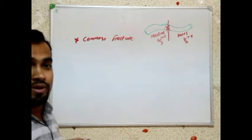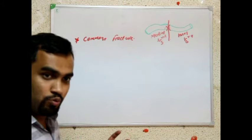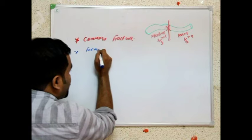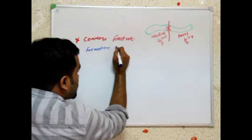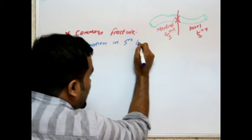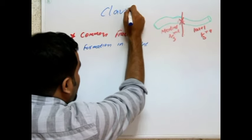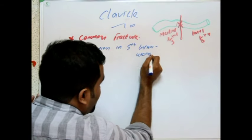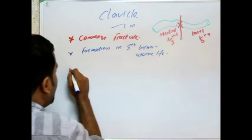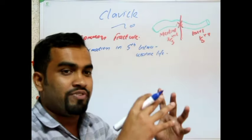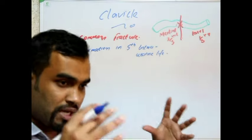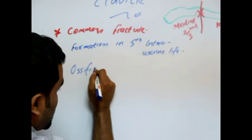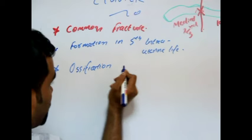Clavicle is formed in the fifth week of intrauterine life — inside the womb. Ossification, meaning the bone will ossify and become strong, occurs in the eighth week of intrauterine life. These are very important and helpful in many MCQs.